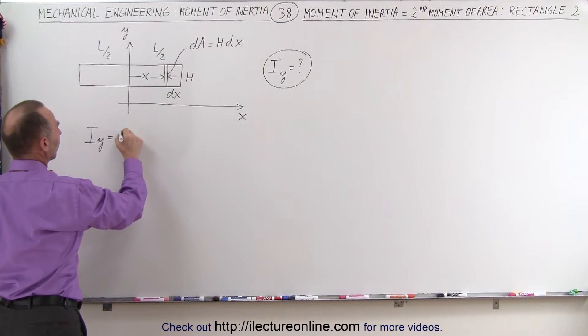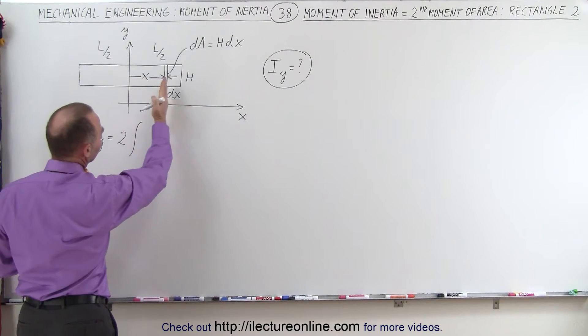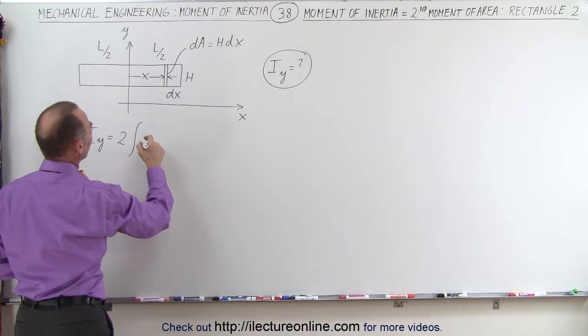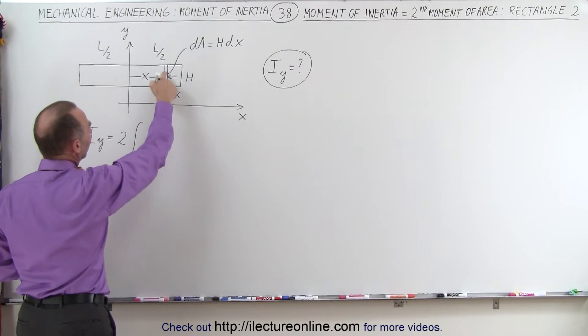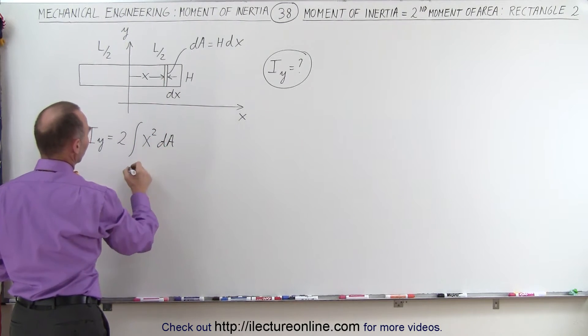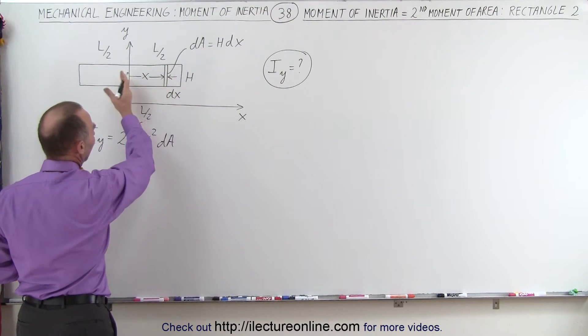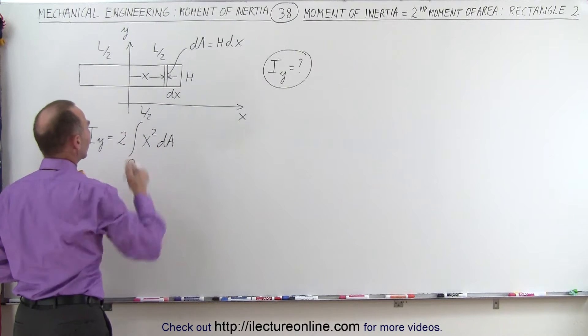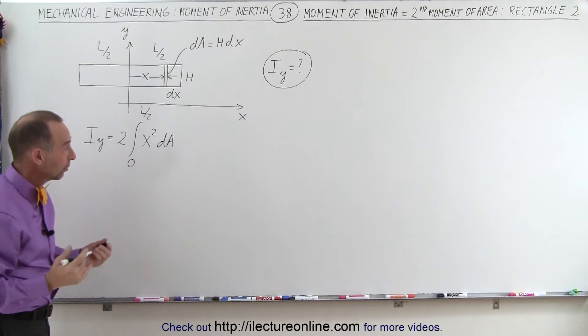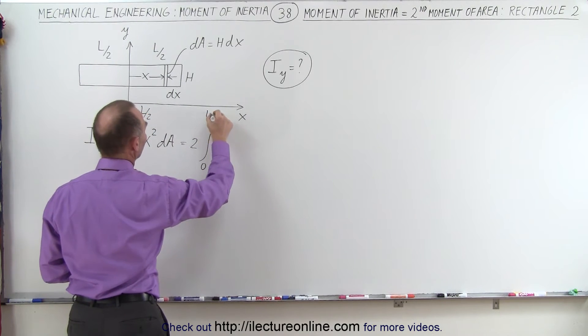So that means that this now becomes twice the integral, because we're going to have to integrate over all the little dA's. We're going to integrate the distance to our area element, x squared times dA, but now the limits are going to be from 0 to L over 2, because we're only doing it for half the length here, and then simply doubling the results.